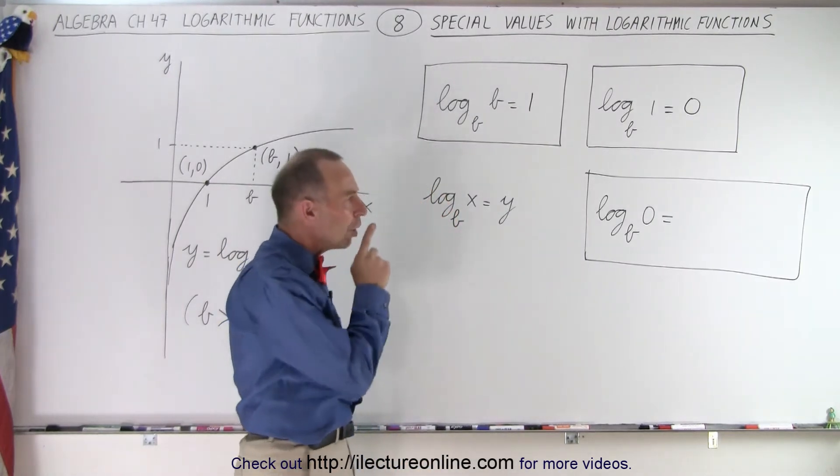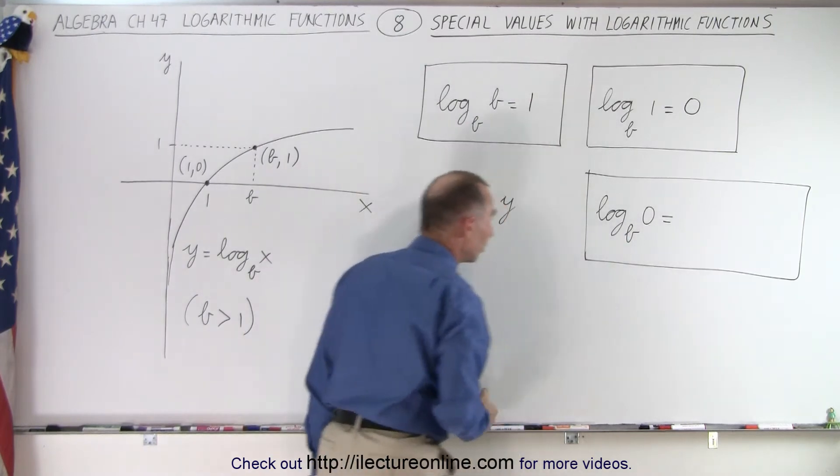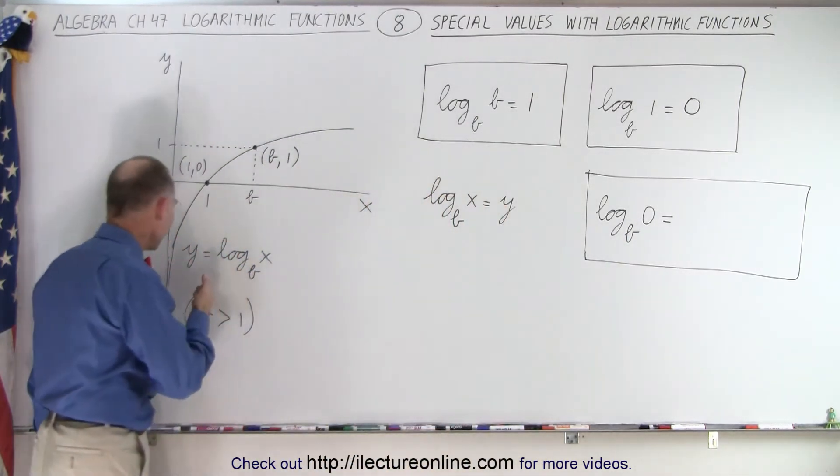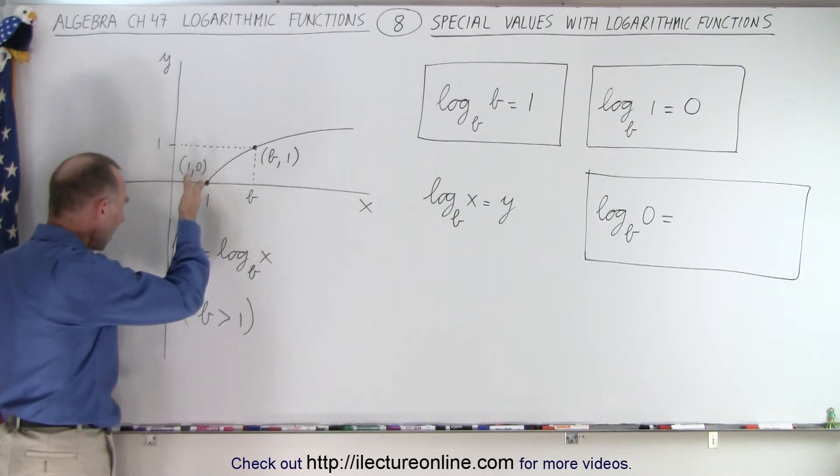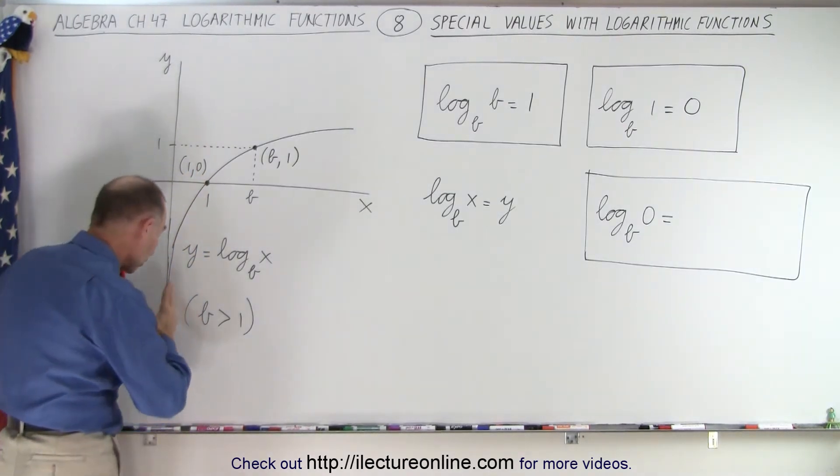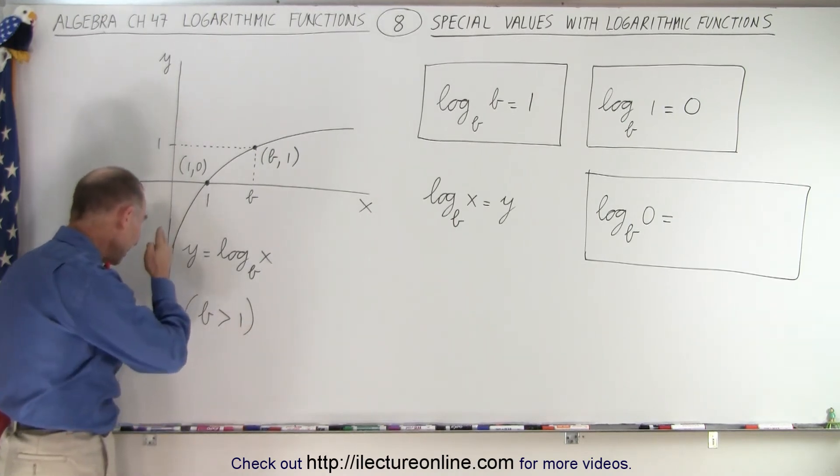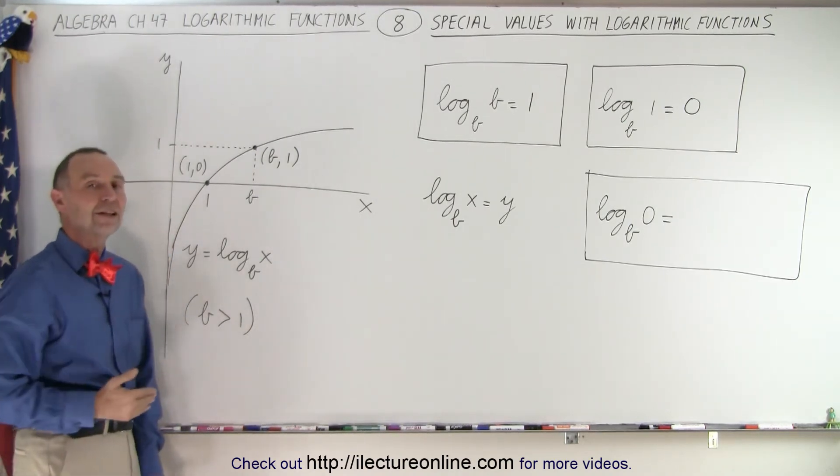What about the log base b of 0? In other words, what happens when x becomes equal to 0? Well, we go back to the graph and notice that the graph never quite reaches the y-axis. In other words, the function never reaches where x equals 0. It asymptotically goes to the y-axis, which means when x becomes 0, y will be negative infinity.